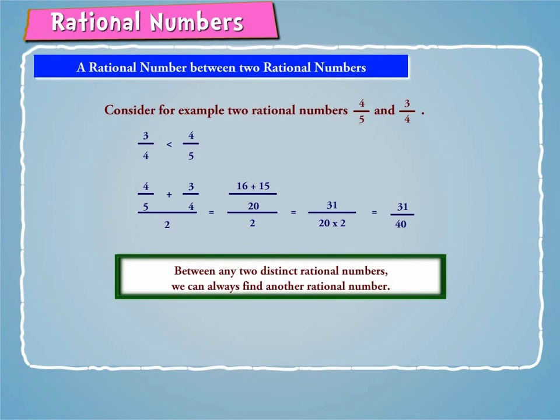Hence, between any two distinct rational numbers, we can always find another rational number.